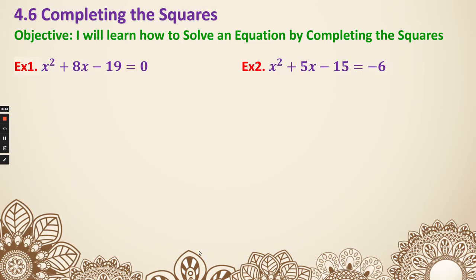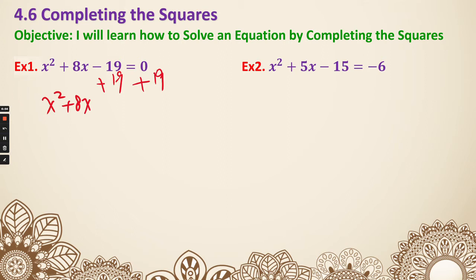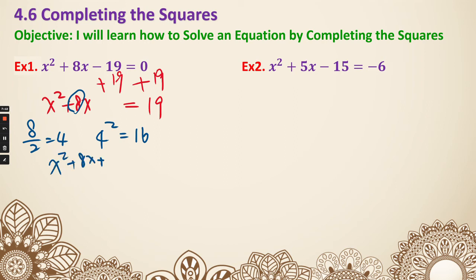Now let's look at more examples. Number 1: the leading coefficient is already 1, so we don't need to divide. Next, move the constant to the right side by adding 19 to both sides: x squared plus 8x equals 19. Take the middle coefficient 8, divide by 2 to get 4, then square it to get 16. Add 16 to both sides: x squared plus 8x plus 16 equals 19 plus 16, which is 35.